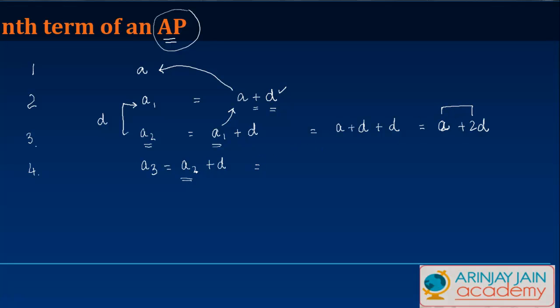So if I replace this A2 with A plus 2D, I get A plus 2D plus D, which is A plus 3D.